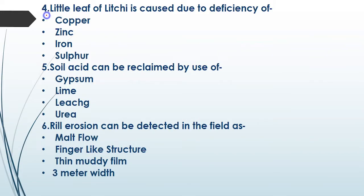Little leaf of litchi is caused due to deficiency of which nutrient? The first option is copper, second is zinc, third one is iron, and fourth one is sulfur. The second option is correct — zinc is the right answer for little leaf of litchi.